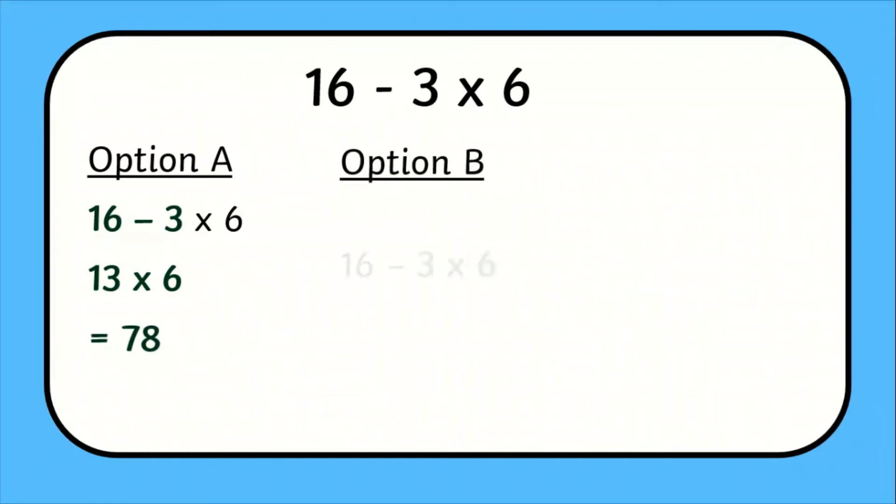Or option B: We do the multiplication first. 3 times 6 is 18. Then we subtract 18 from 16 and get negative 2.